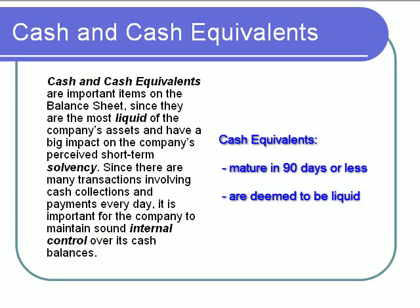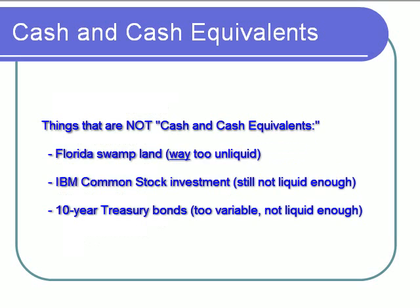Something like a short-term 30- or 60-day treasury bill, or a bank certificate of deposit, as long as its term isn't more than 90 days, could be classified as a cash equivalent. But an investment in Florida swampland, when we don't know when it could be sold and how much we would receive, could not be called a cash equivalent.